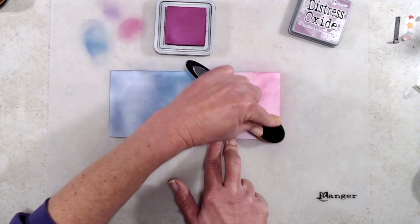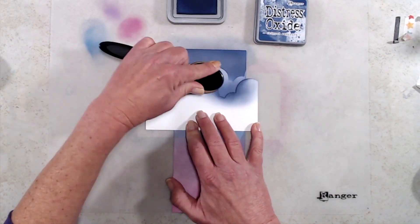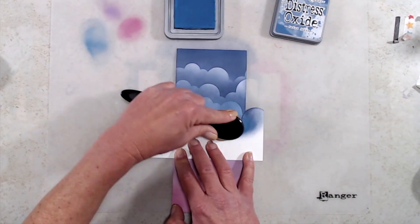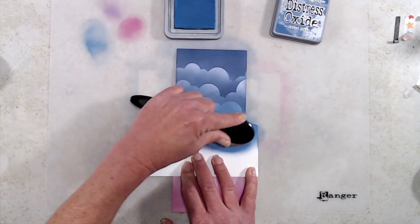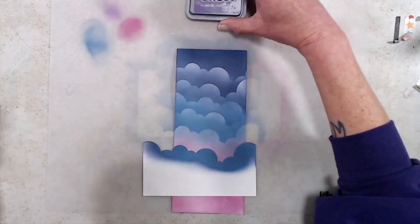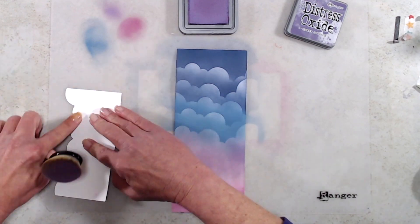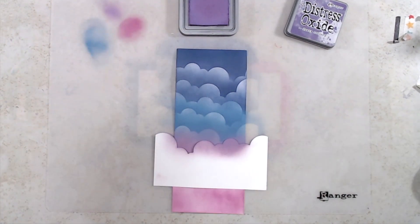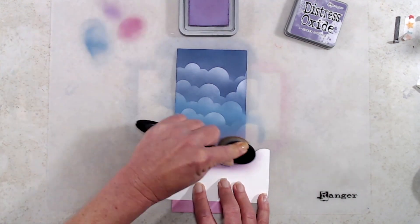For my cloud stencil I used the Grass and Cloud Edger die set and I just cut the clouds from a piece of thin weight cardstock and I was able to use it as a stencil. As you can see it worked out just fine, and I did use all of the same ink colors for my clouds. One tip for you, when stenciling clouds you want to actually start on your stencil, that way you can go up onto the cardstock and have that nice fade out so the very tops of the clouds are a little bit lighter.